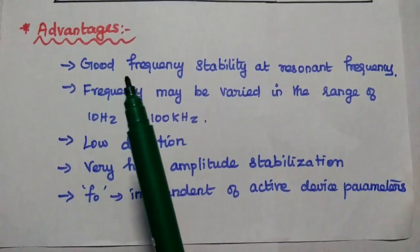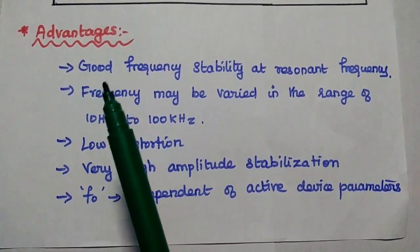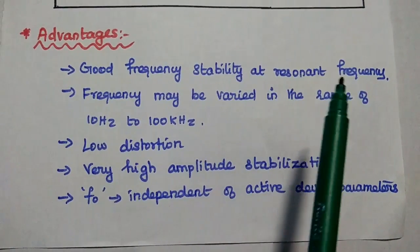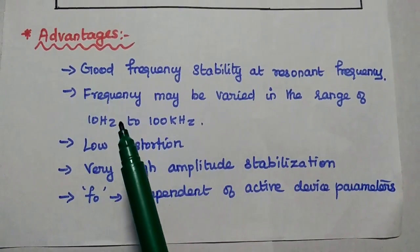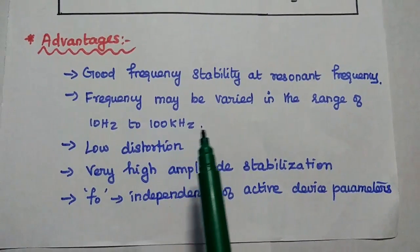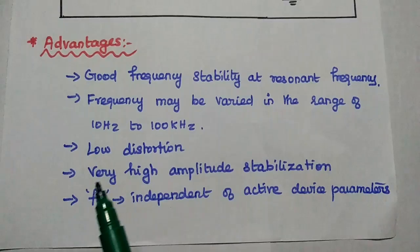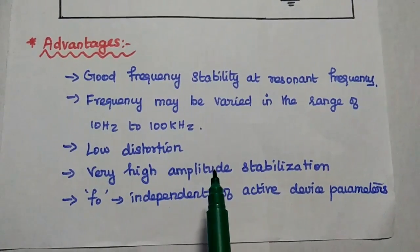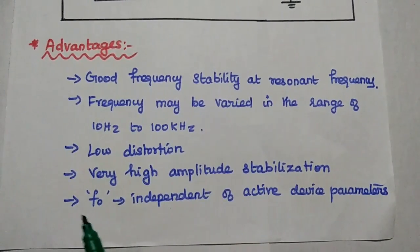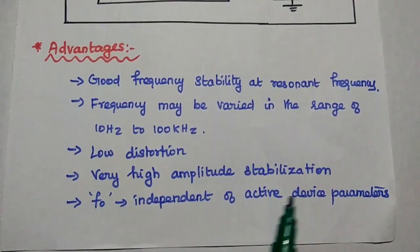Advantages of the Wainbridge oscillator: it has very good frequency stability at the resonant frequency range. The frequency may be varied in the range of 10 Hz to 100 kHz. It has low distortion and provides very high amplitude stabilization. The resonant frequency is independent of active device parameters.